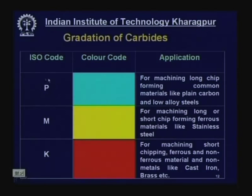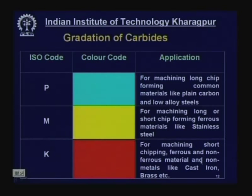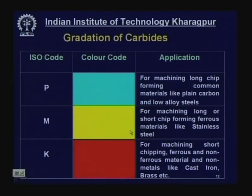K grade is for machining short-chip-forming ferrous and non-ferrous materials and non-metals — basically single carbide with fewer additives, suitable for cast iron and similar materials. M grade is suitable for machining ductile but harder materials — for long or short chip-forming ferrous materials like stainless steel, austenitic steel, and nickel steel.